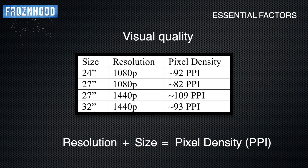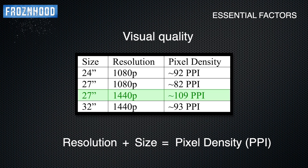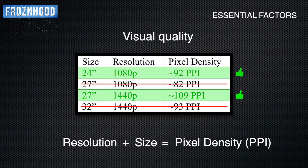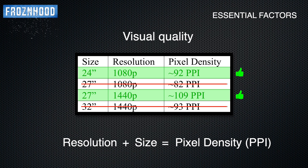1080p monitors usually come in two sizes: 24 and 27 inch. 27 or 32 inch are common sizes for 1440p monitors. Looking at the pixel density of these four combinations, the third option may seem like the obvious choice. But in practice, even though it has much higher pixel density than the other options, it doesn't look much different in games compared to a 24 inch 1080p monitor. Both bigger sizes of each resolution look equally poor despite the difference in pixel density. I recommend either a 24 inch 1080p or a 27 inch 1440p monitor.